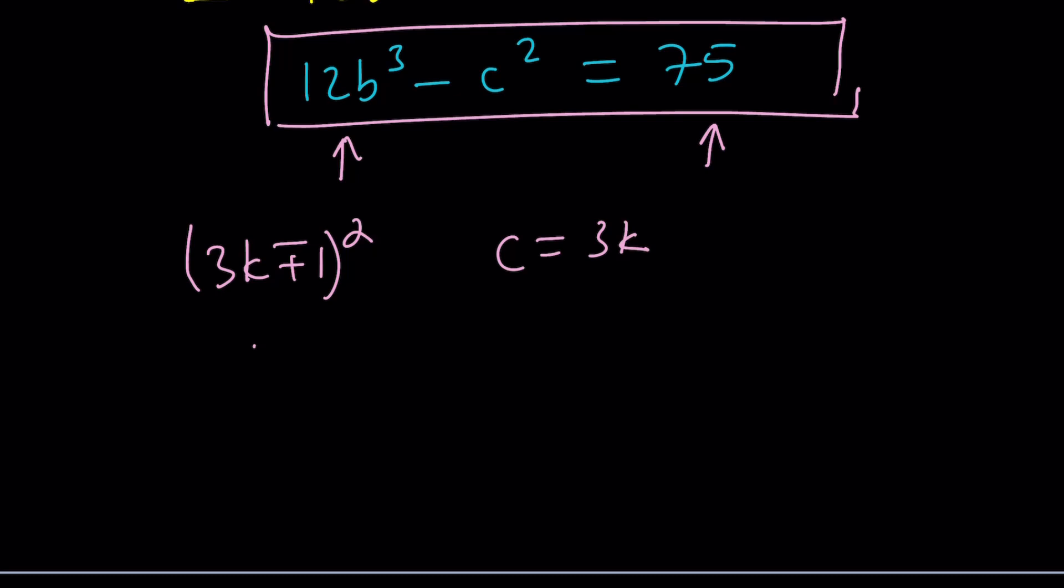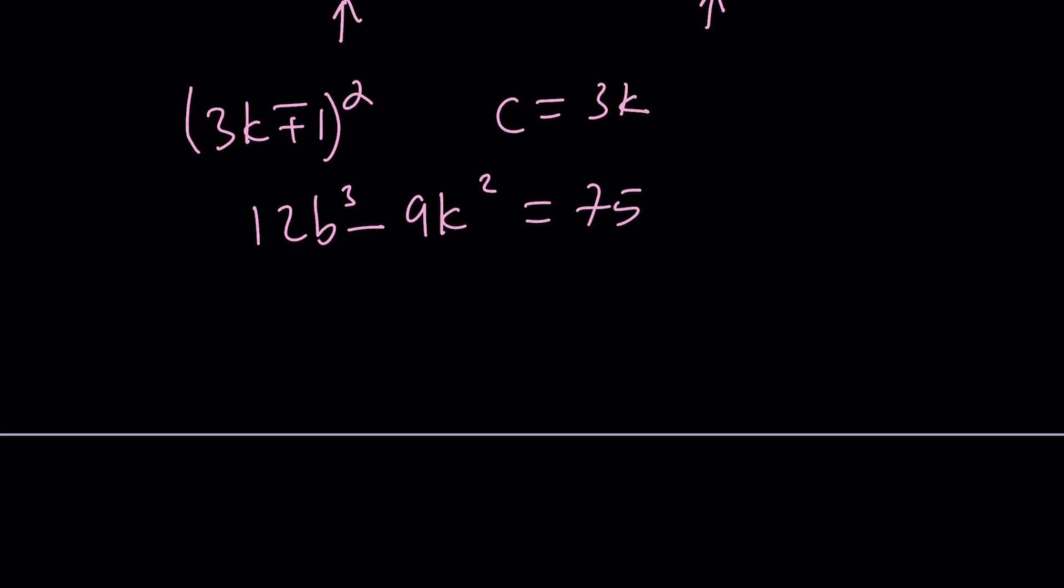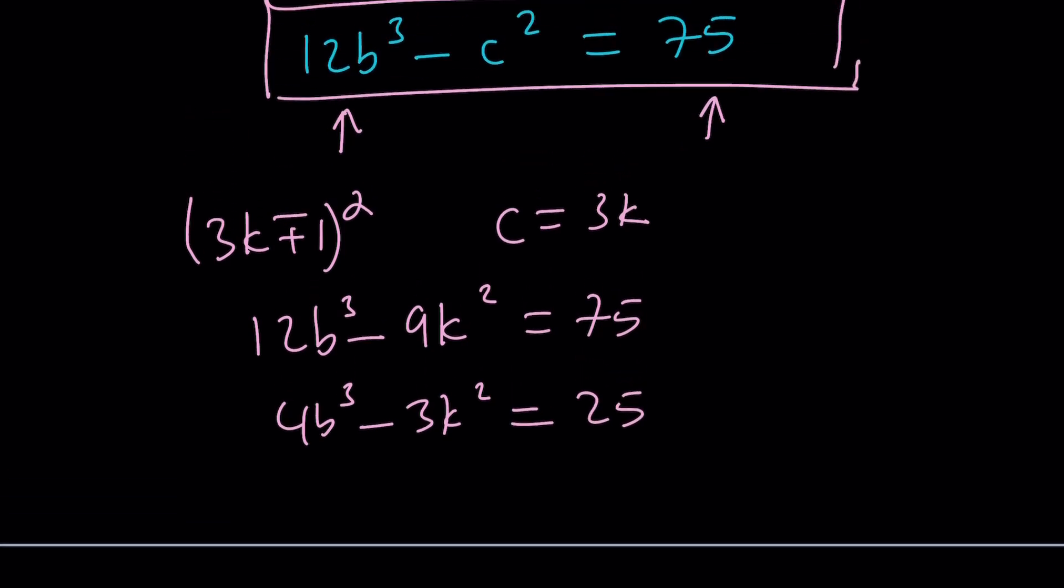We get 12b³ - 9k² = 75, and now we can divide everything by 3. That gives us 4b³ - 3k² = 25.